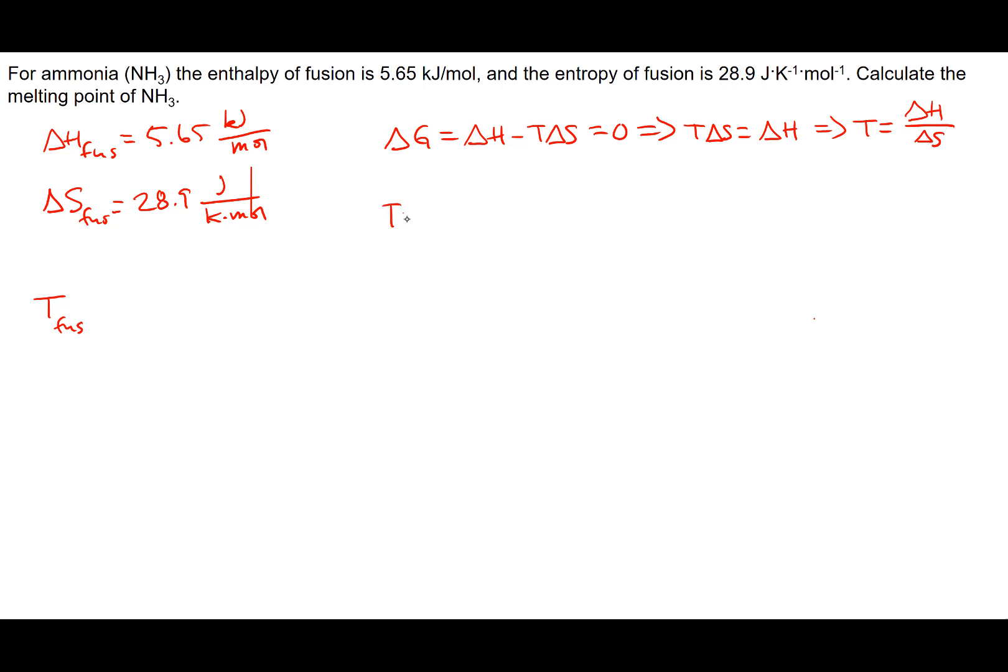So since we have those values, the T is going to be equal to – and so one thing to point out, delta H enthalpies are typically given in kilojoules, whereas entropies are typically given in joules. So we want to make sure that we convert that delta H of fusion first into joules per mole. So that's just simply going to be 5,650 joules per mole.